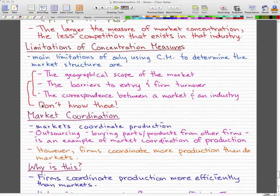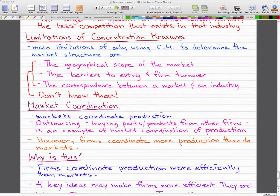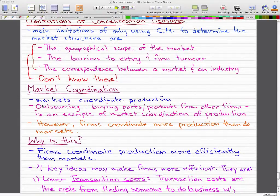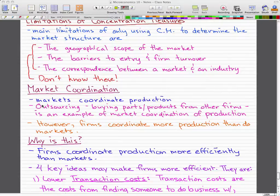Market coordination. Markets coordinate production. Outsourcing is pretty much buying parts and products from other firms, and that is an example of market coordination of production. However, firms coordinate more production than do markets.